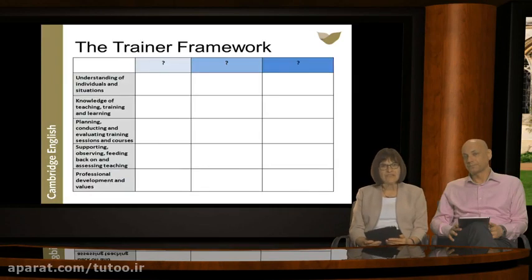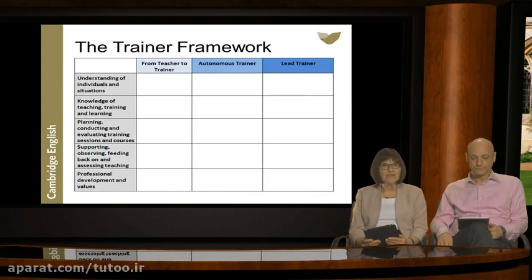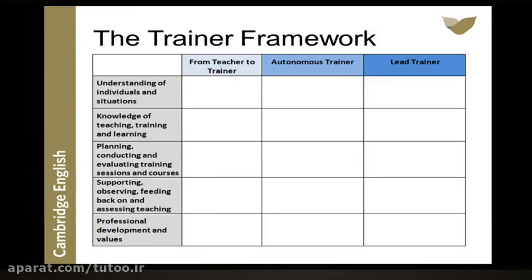Now let's look at the stages of development that the trainer goes through, placed along the top of the grid. Consultation and discussions with trainers around the world led us to three stages of development. First: 'From Teacher to Trainer' — the stage at which teachers are moving into the role of trainer and will benefit from support. Second: 'Autonomous Trainer' — a trainer who has the skills and confidence to be more independent. Third: 'Lead Trainer' — an accomplished trainer who has the skills to support other trainers.